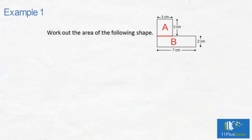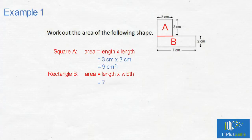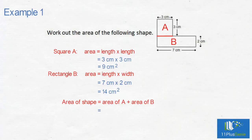We have the lengths of all the sides. For square A, the area equals length times length, which is 3cm times 3cm, equals 9cm squared. For rectangle B, the area equals length times width, which is 7cm times 2cm, equals 14cm squared. The area of the shape is area of A add area of B, which is 9cm squared add 14cm squared, which equals 23cm squared.